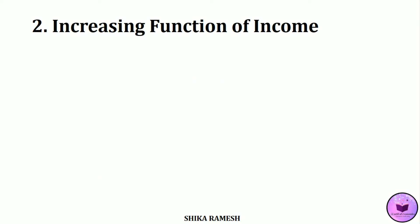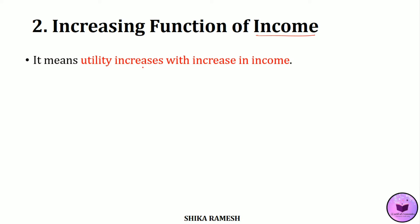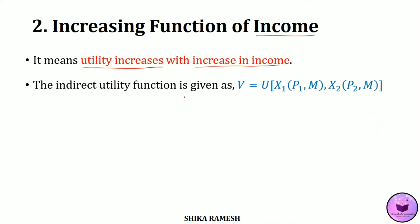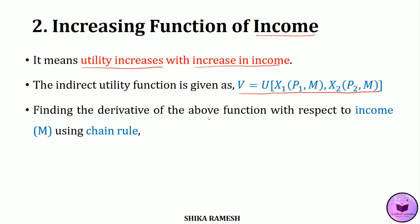The second property is that the Indirect Utility Function is an increasing function of income. This means that when the consumer's income increases, the consumer's utility also increases. To prove this, we take the Indirect Utility Function v = u(x1(p1, m), x2(p2, m)) and find the derivative with respect to income using the chain rule.